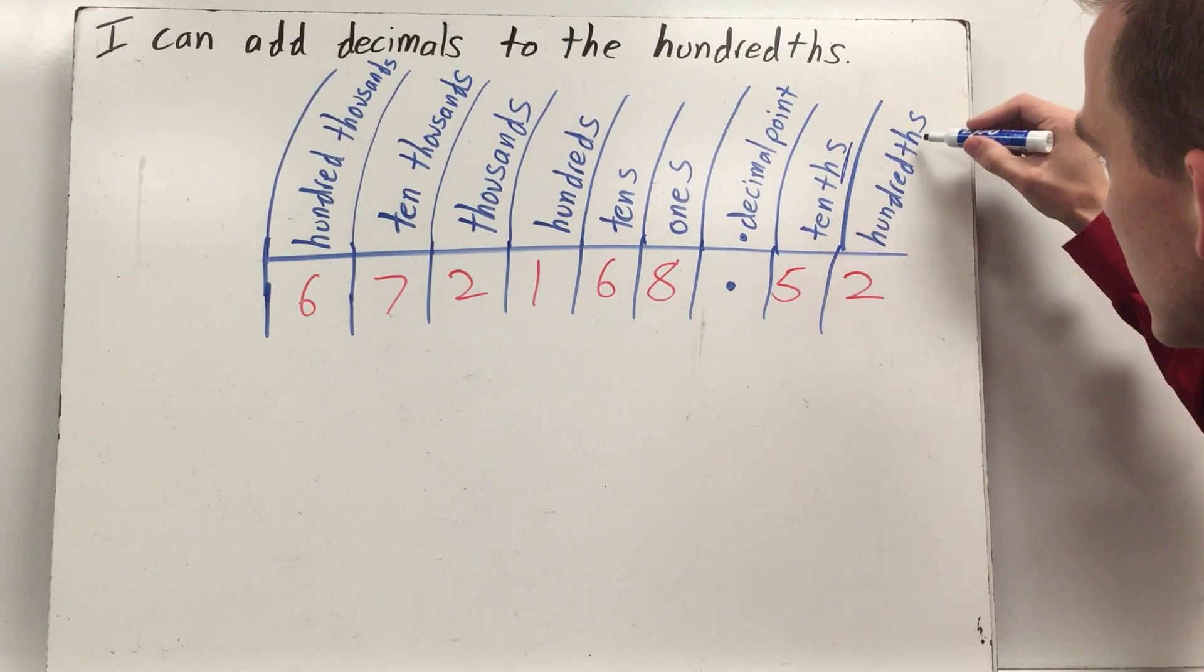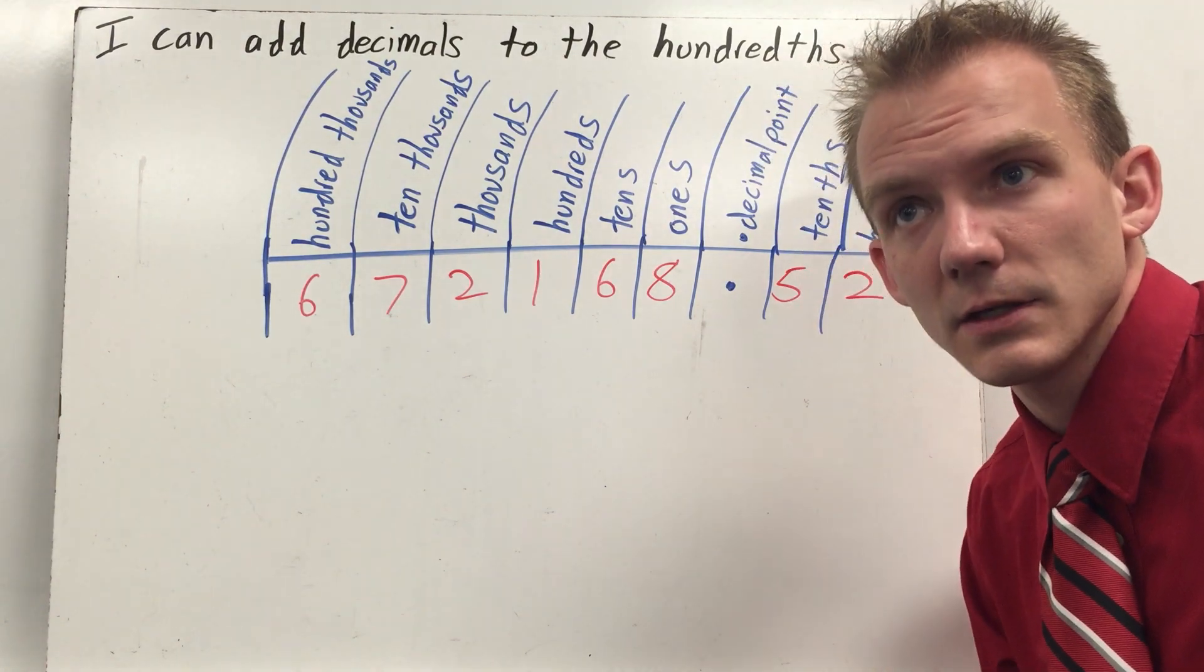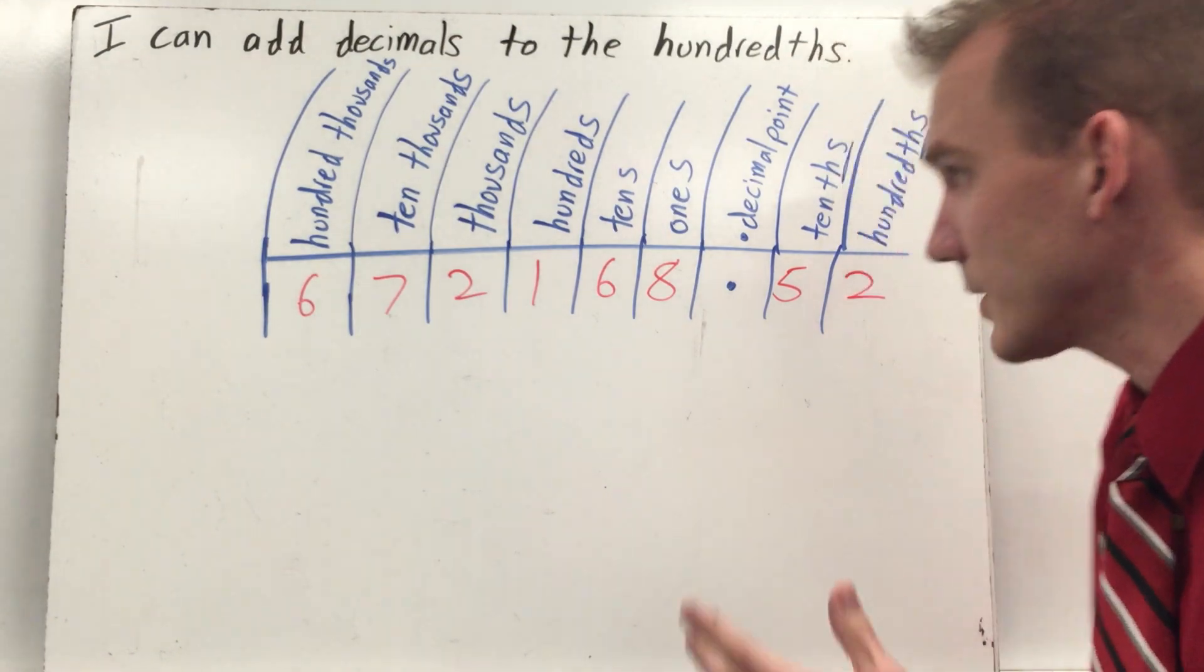The biggest difference here is you have these 'ths'. And that just sounds like fractions - tenths, hundredths. It's because it's very similar. They are similar to fractions.